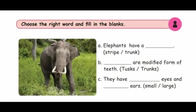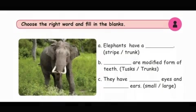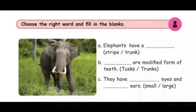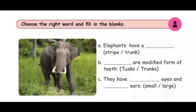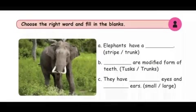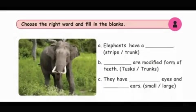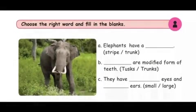Second question: Elephants have a trunk. Tusks are a modified form of teeth — correct answer is tusks. Third one: They have small eyes and large ears.